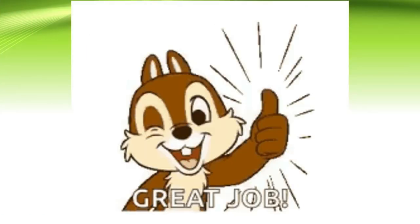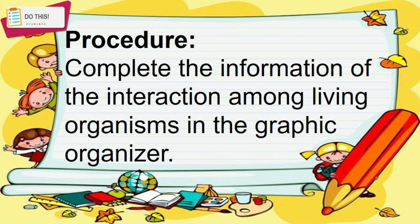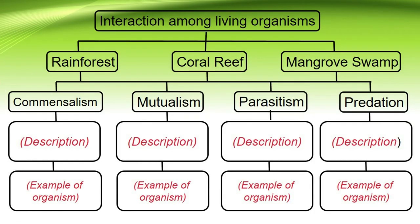Great job! You finished the activity. For Activity 5, you will need an activity notebook and ball pen. Complete the information about the interactions among living organisms in a graphic organizer covering rainforest, coral reef, and mangrove swamp. The interactions are commensalism, mutualism, parasitism, and predation. For row number 4, give the description of each interaction. For row number 5, give examples of organisms.